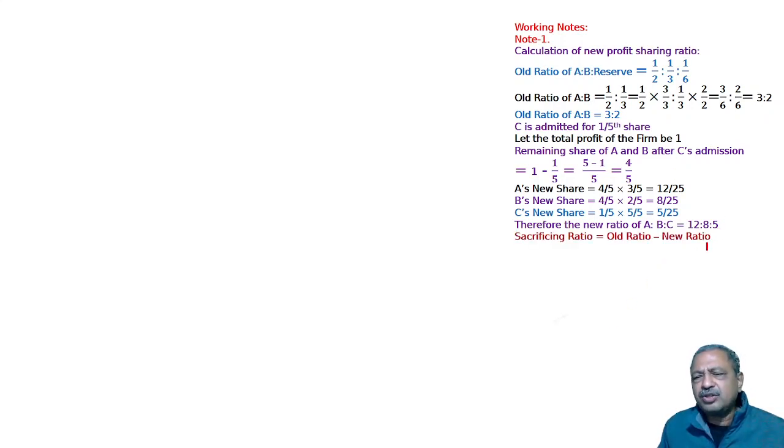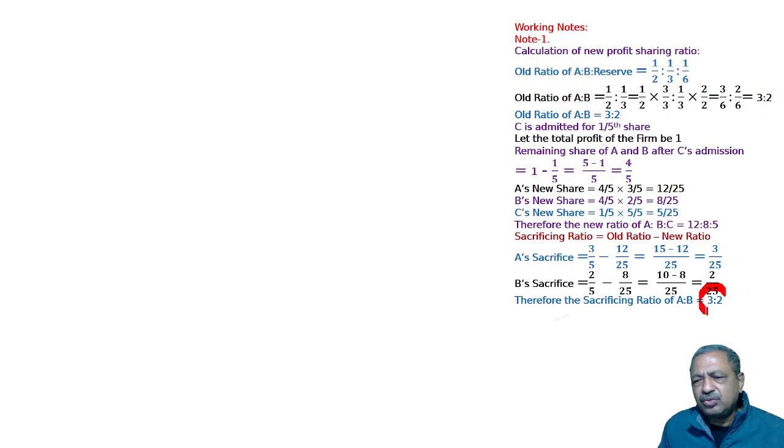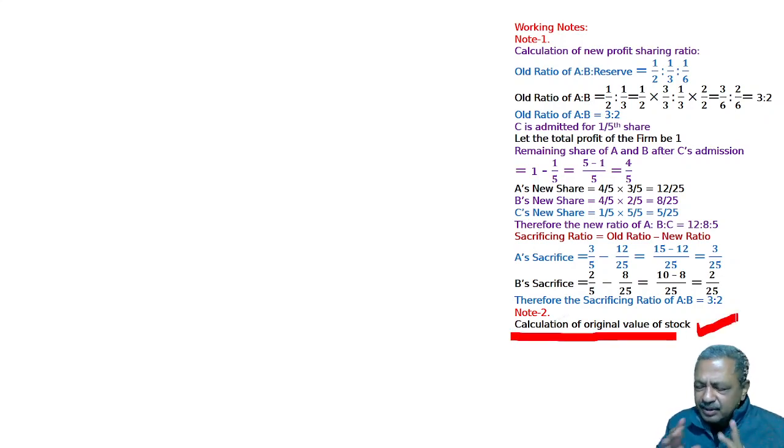Sacrificing ratio calculation: old ratio minus new ratio. A's is 3 by 25, B's is 2 by 25. So the sacrificing ratio is 3 is to 2. Read the question thoroughly. This was working note number 1. Working note number 2 I'll explain to you. This is valuation of stock. Calculation of original value of stock. This has been given in a different way. You see.